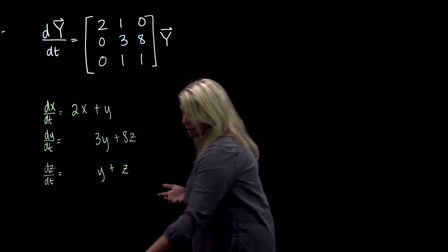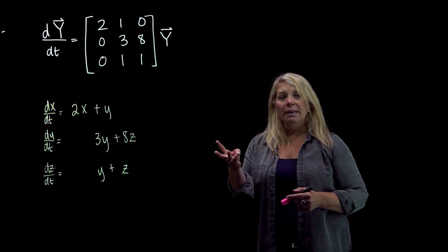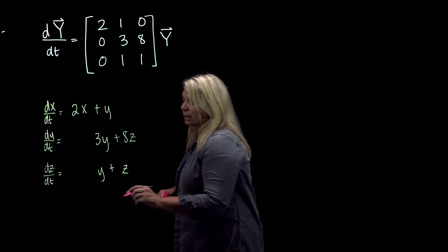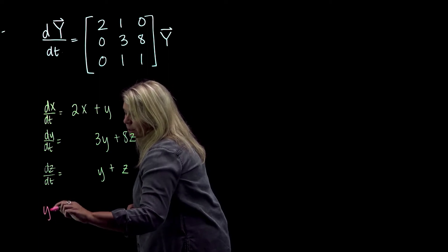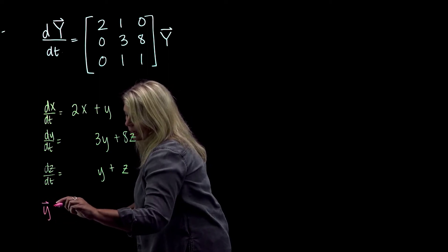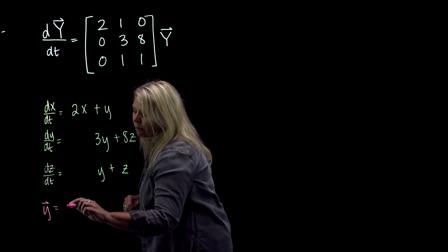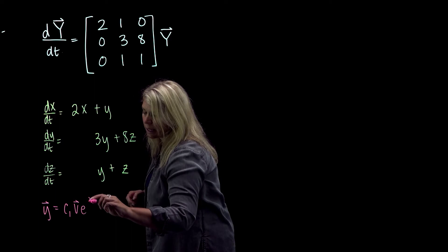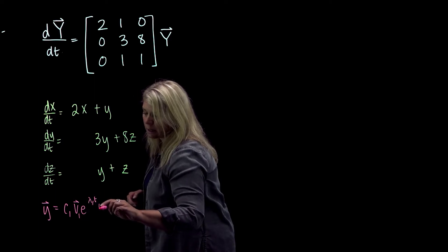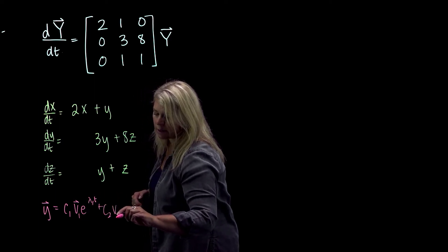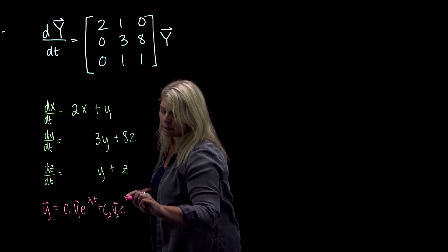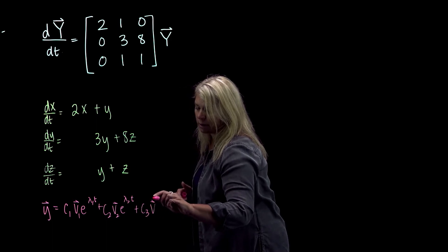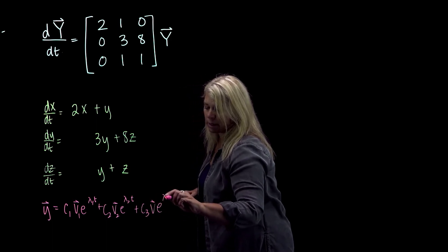Remember that for a three-dimensional system, I need to find three linearly independent solutions that form the general solution. So my three linearly independent solutions would be, hopefully, of the form of some eigenvector times e to the lambda 1 t plus another eigenvector times e to the lambda 2 t plus a third eigenvector times e to the lambda 3 t.